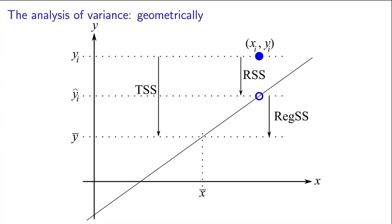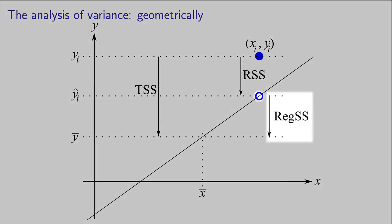Now we have another distance to consider. When we have that xi value over here, the best estimate for the prediction of y is the point on the line. This vertical distance, regss, the regression sum of squares, is the distance from the prediction point on the line to our base case.